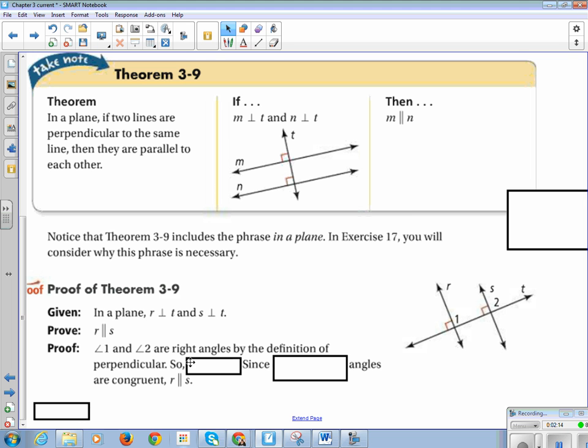So we can say angle 1 is congruent to angle 2. And since corresponding angles are congruent, line R is parallel to line S.